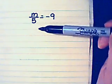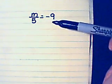This tutorial is going to show you how to solve a division equation. Here I have m divided by 5 equals negative 9.